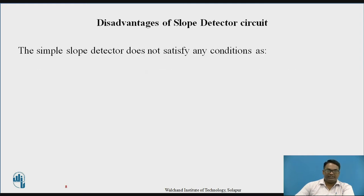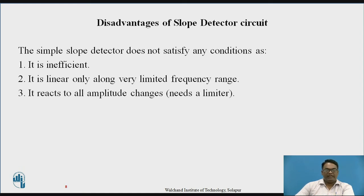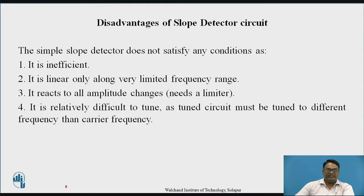The disadvantages of the slope detector are: firstly, it is inefficient for variations in frequency with respect to the carrier. Secondly, it is linear only along a very limited frequency range. Thirdly, it reacts to all amplitude changes, hence an amplitude limiter circuit is needed. Fourthly, it is relatively difficult to tune the two capacitors — primary and secondary — for the same frequencies as the carrier frequency.